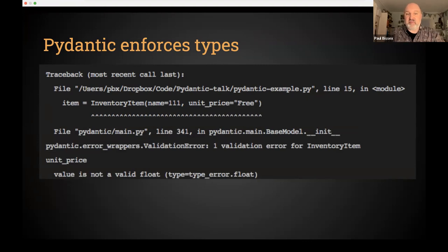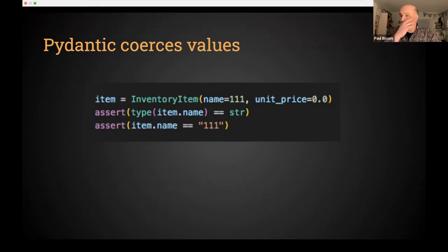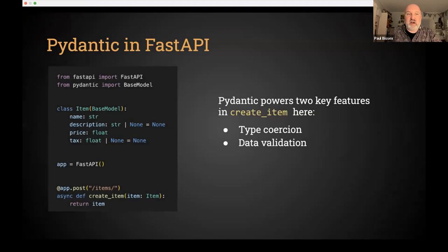Now we get runtime type enforcement from Pydantic. If you try to initialize an object with two params of the wrong type, it complains that unit_price of 'free' is not a float. It didn't complain about the int passed as name because it also does type coercion — any value that can be coerced to a string will be coerced. That can be a convenience, especially in the web world.